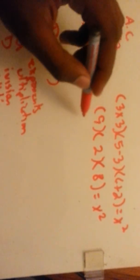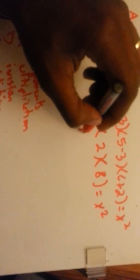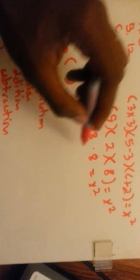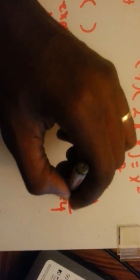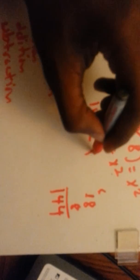So again, we multiply these out. 9 times 2 would be 18, times 8. 8 times 8 is 64... working through this gives us 144 equals x squared.